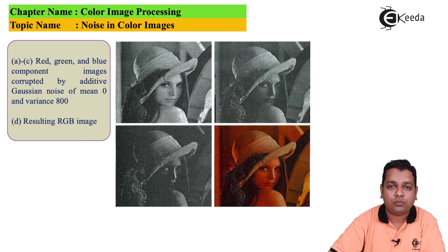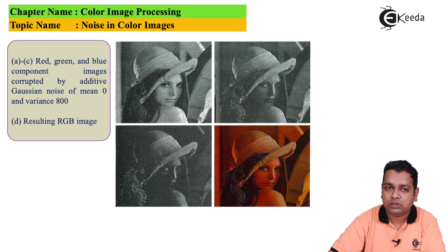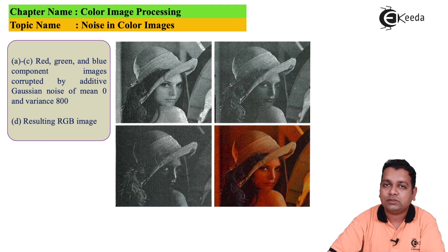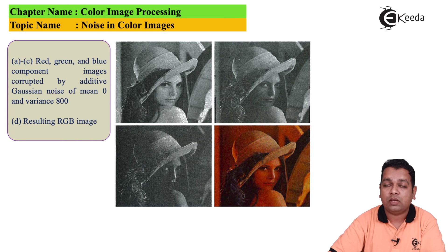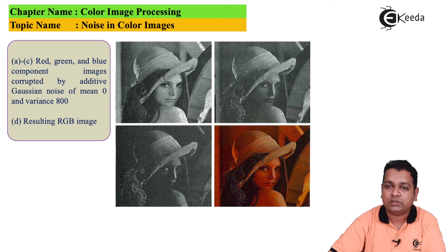Here we have an example with figures A, B, C, and D. Figures A to C represent the red, green, and blue components of images corrupted by additive Gaussian noise with mean value mu equal to 0 and variance sigma squared equal to 800. As in the earlier chapter on image restoration, either blur or noise is introduced to degrade the image. The resulting RGB image containing the noise is represented in part D.